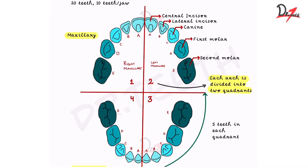In the deciduous dentition we have: the central incisor, the lateral incisor, the canine, the first molar, and the second molar. Note that the premolar is not present in the deciduous dentition — we only have premolars in the permanent dentition. Also, we do not have the third molar in the primary dentition. So we have five teeth in each quadrant.